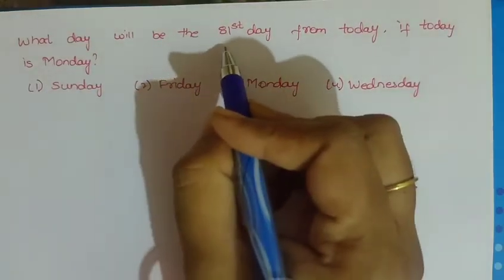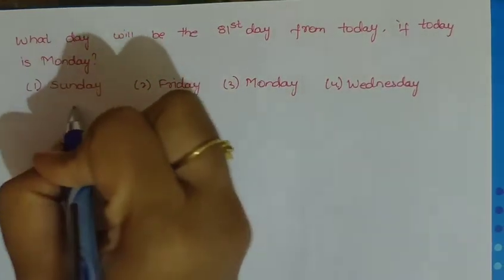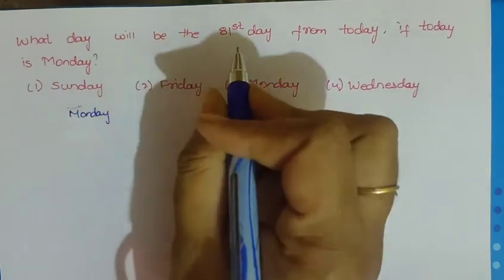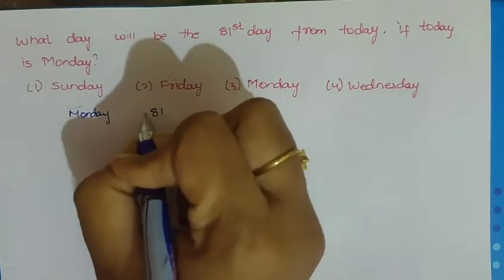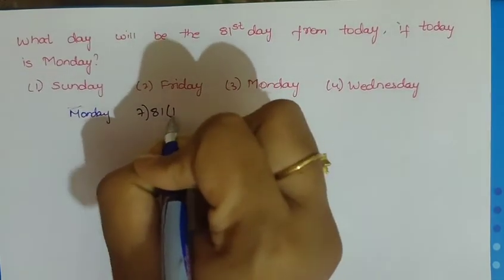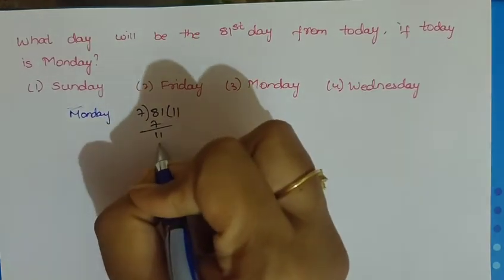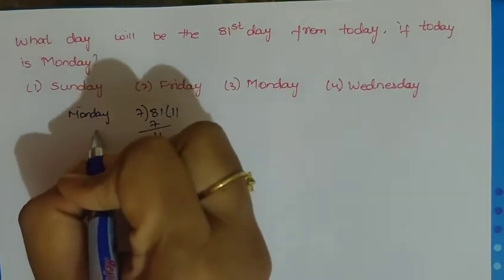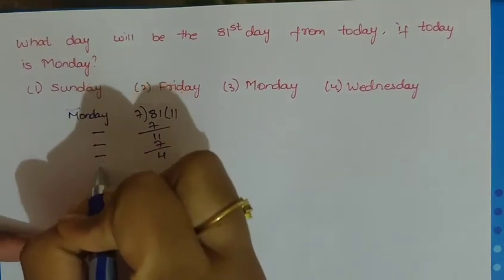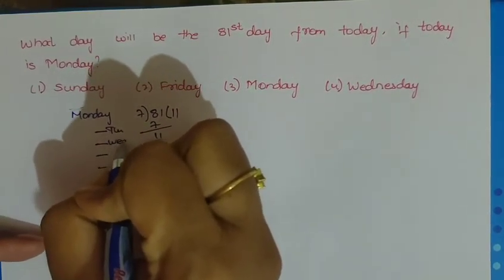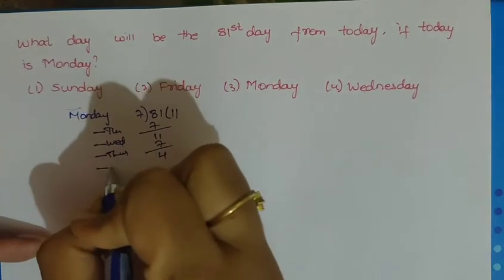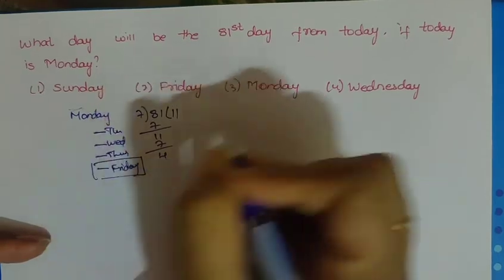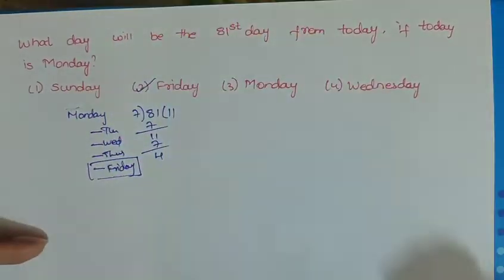What will be the 81st day from today if today is Monday? To find the number of odd days in 81 days: 81 divided by 7 gives 11 remainder 4, so there are 4 odd days. Starting from Monday, counting 4 odd days: 1 is Tuesday, 2 is Wednesday, 3 is Thursday, 4 is Friday. So the 81st day will be Friday.